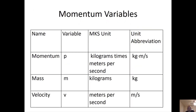The variables we're going to have in this unit: momentum, P, with units of kilograms times meters per second; mass, M, with units of kilograms; and velocity, V, with units of meters per second.